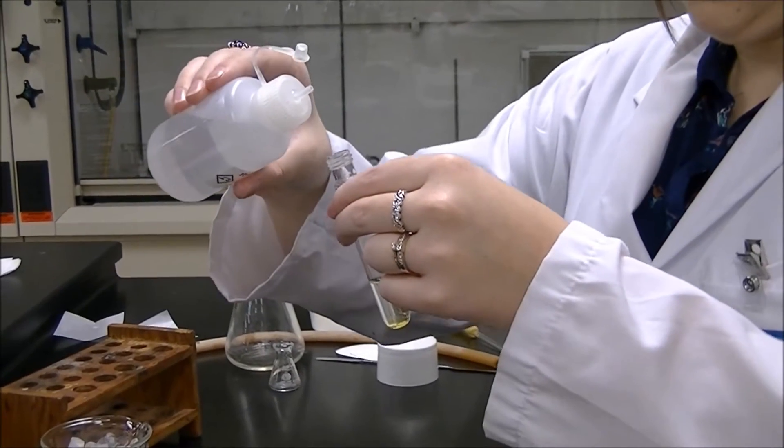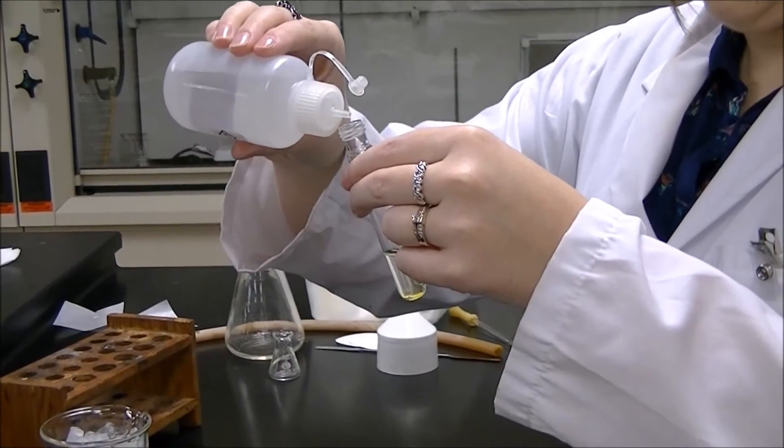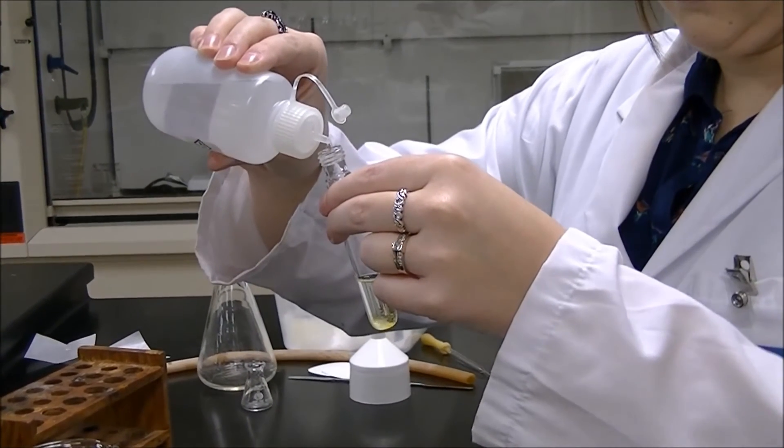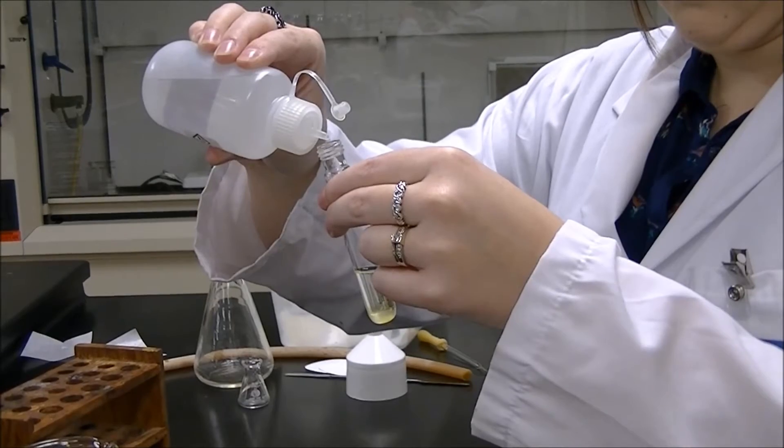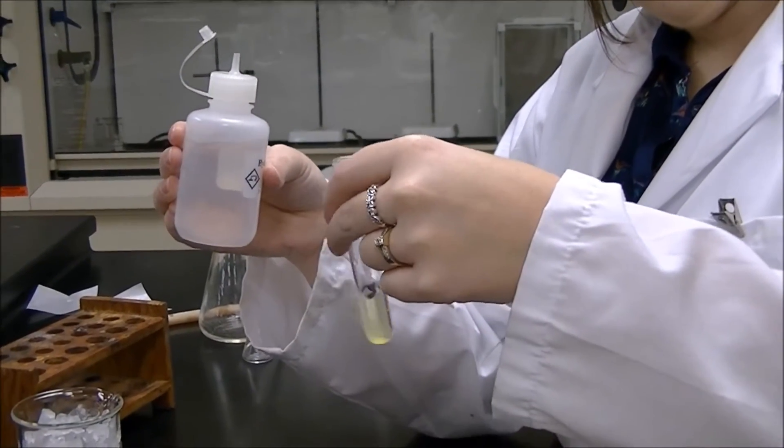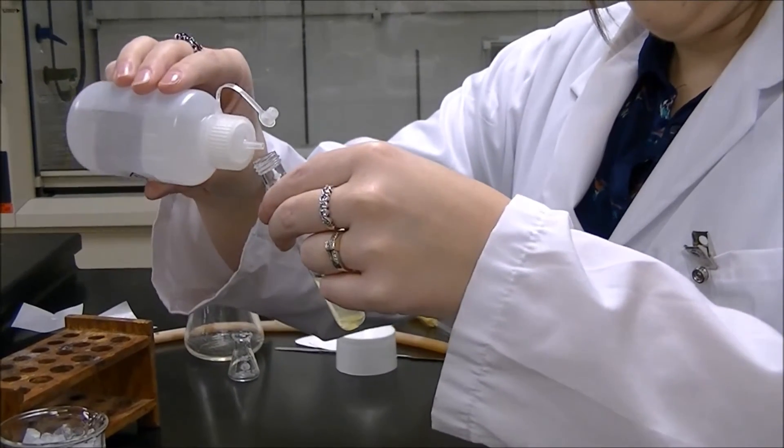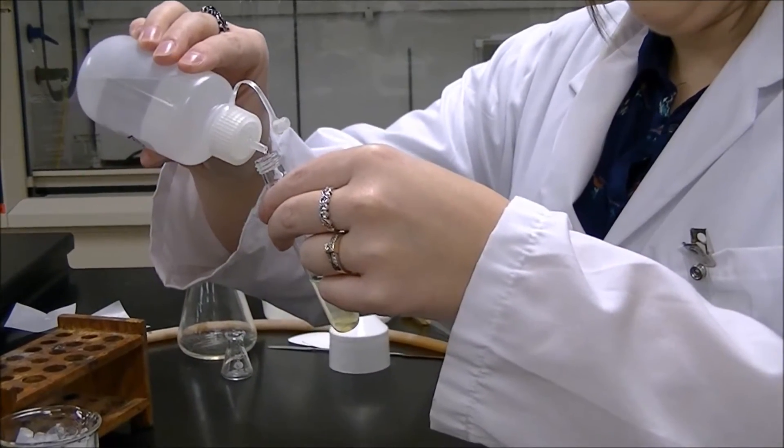Add about 2 milliliters of 3-molar HCl dropwise to the centrifuge tube while swirling. 2 milliliters of HCl is about two-thirds of an inch of solution. This will protonate our ethyl-4-aminobenzoate so it can make hydrogen bonds and dissolve into the aqueous layer.